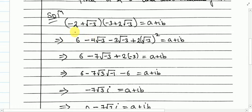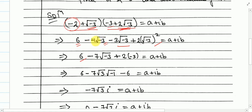We have the first bracket and the second bracket. Now we multiply: minus 2 multiplied by minus 3 gives 6. Then minus 2 multiplied by 2√(−3) gives that term. Then √(−3) multiplied by minus 3 gives another term. Then √(−3) multiplied by 2√(−3) gives 2 times (√(−3))². In the next step: this is 6, here we get 4√(−3), here 3√(−3), so combining — minus 4 plus minus 3 gives minus 7 — and keep √(−3) here.